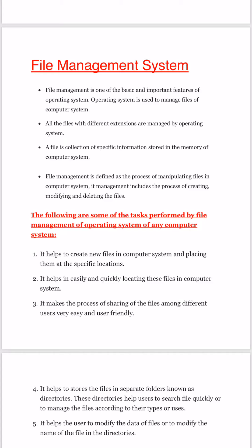The operating system performs a lot of activities. What is the system handling? What is the task of it? To manage files. A file is a collection of specific information stored in the memory of the computer system. The operating system handles all the files in a system. File management is one of the basic and important features of the operating system. There are a lot of files in a system, and every file is not in the same format — they will have different extensions.